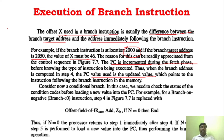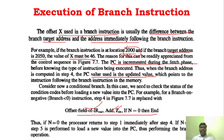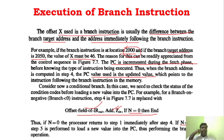There is also something called conditional branching. In conditional branching, there must be some condition — only if that condition is satisfied will it branch. If the condition is not satisfied, the operation ends. For example, if n equals 1, it will go to step 5 and execute those same steps. If n equals 0, then it will end — it will complete that particular operation without branching. This is conditional branching.